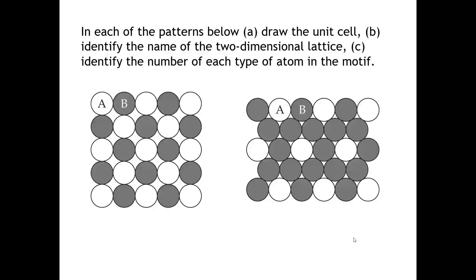Let's finish with an example. I'm showing two different two-dimensional patterns of atoms. For each one, find the unit cell — the smallest repeating brick — and draw it in. Then identify which of the five two-dimensional lattice types it belongs to, and tell me how many atoms of type A and type B are in the motif. Pause the video, work through the answers, then come back to go over them.